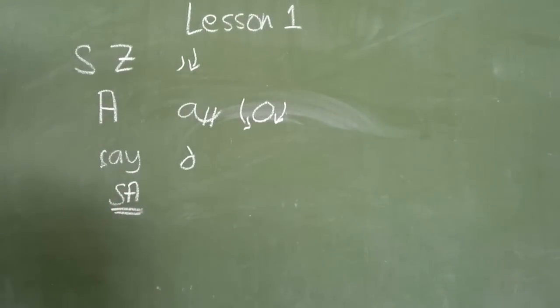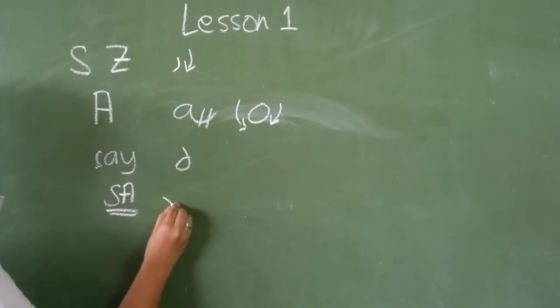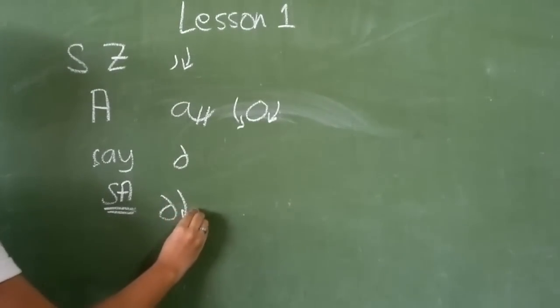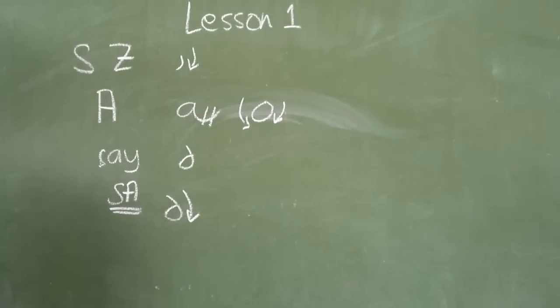You have learned the strokes S and A. You can now create the shorthand outline for the word 'say.' We'll just have to combine the tiny downward curve with the circle, and there you have it.